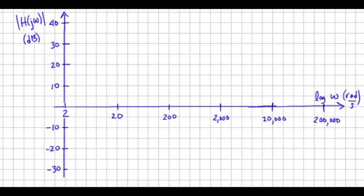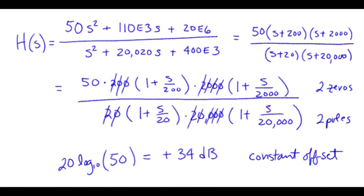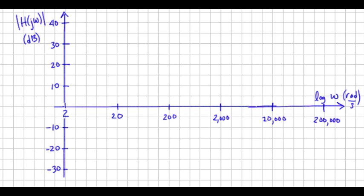So let's look back at our two zero locations. The first zero is at 200 radians per second. So that means we have a break right at 200. Then we rise at 20 dB per decade. And I'm actually using a straight edge as I'm doing this. So straight edges probably work the best with a piece of graph paper.